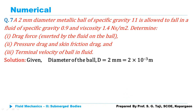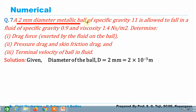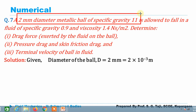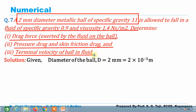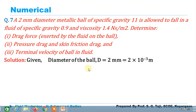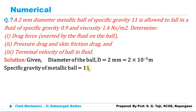The third numerical: a 2 mm diameter metallic ball of specific gravity 11 falls in a fluid of specific gravity 0.9 and viscosity 1.4 N·s/m². Determine: drag force exerted by the fluid on the ball, pressure drag, skin friction drag, and terminal velocity of the ball in the fluid.